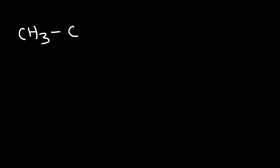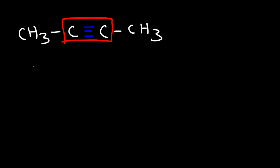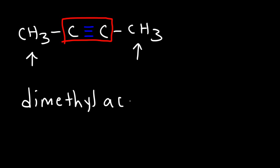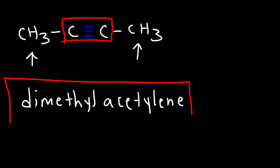Based on that example, go ahead and try this one — write the common name for this molecule. Let's focus on the acetylene portion of the molecule. Notice that we have a methyl group on the left and on the right. So therefore this is going to be called dimethylacetylene. Hopefully you're getting the hang of how to write the common names of alkynes.